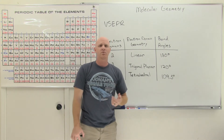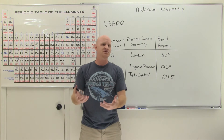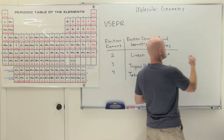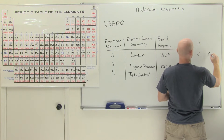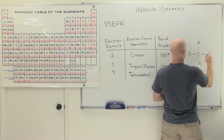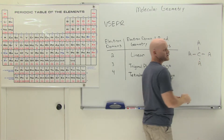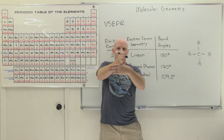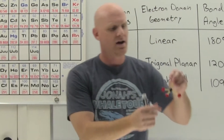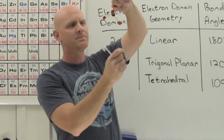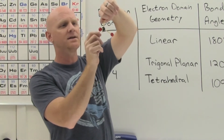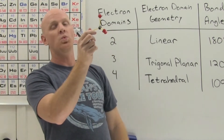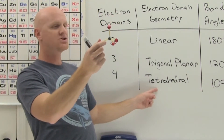With four electron domains, it ends up being a three-dimensional shape. They can spread out farther in three dimensions than in two. In two dimensions they'd be 90 degrees apart, but by rotating and placing two in one plane and two in another, we can spread them out to 109.5 degrees. This three-dimensional shape is called tetrahedral.